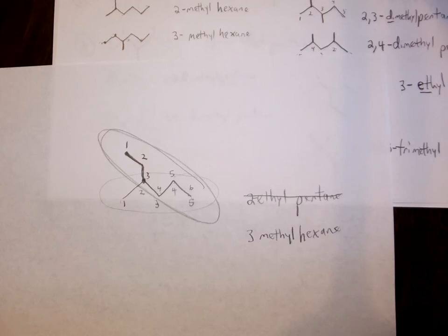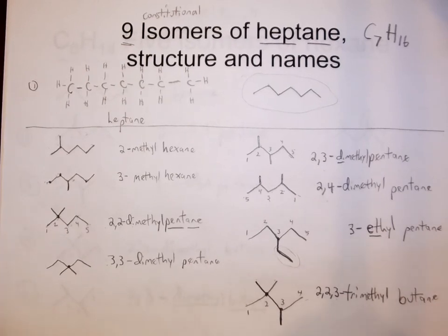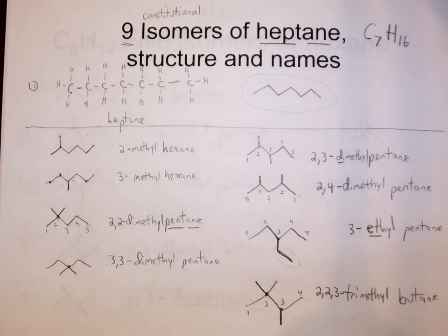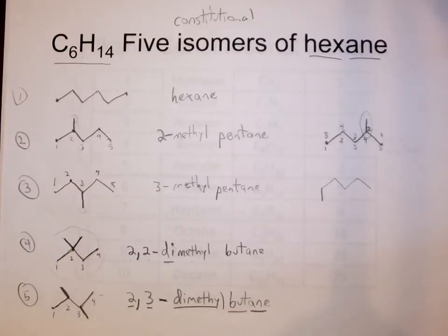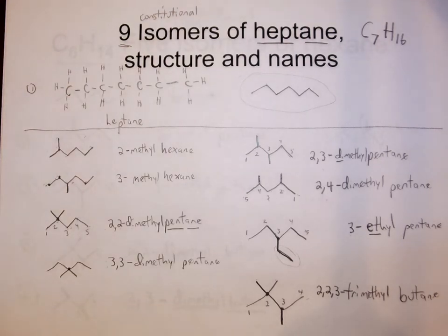When you learn how to name organic compounds, you'll also learn how to identify whether things are the same or different, because if they have the same name, they're the same; if they have different names, they're different. So these are the nine unique constitutional isomers of heptane. You should be able to at any time write out skeletal structures, names, and the formula for the nine isomers of heptane, much like we learned to do for the five constitutional isomers of hexane. This is where things are interesting enough to make it worthwhile to work through, but not overwhelming — so good questions for tests or quizzes. Never rush; it causes you to make mistakes.